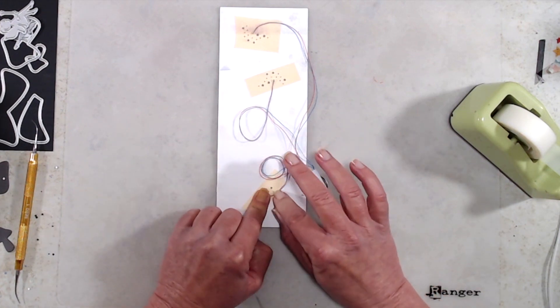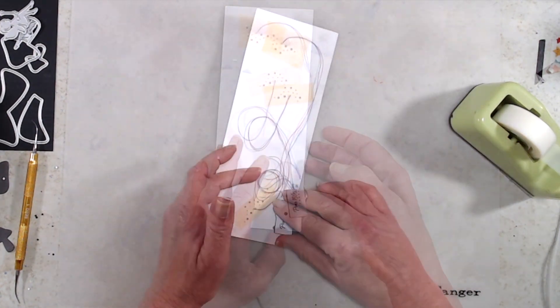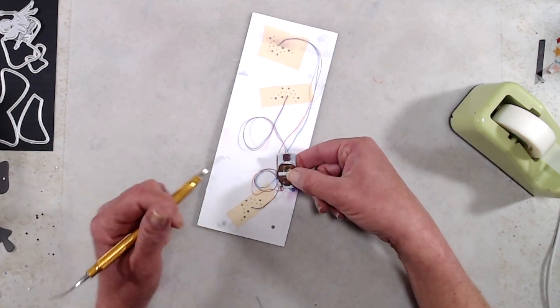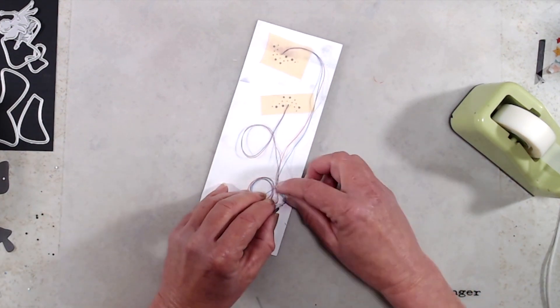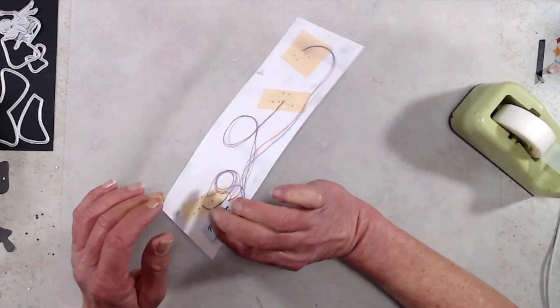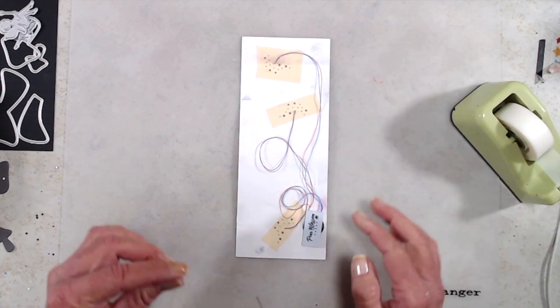And on the back side of the mechanism where the battery is I used some score tape on the back side of it just to make sure that it stayed put on the back side of my card panel. Once I had that adhered into place I used even more Scotch tape just to make sure that those wires stayed down.